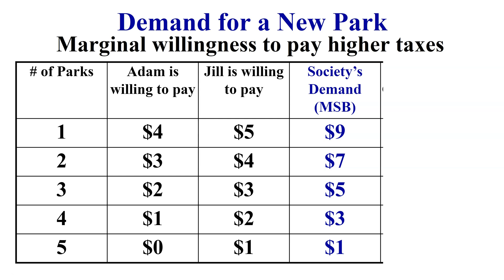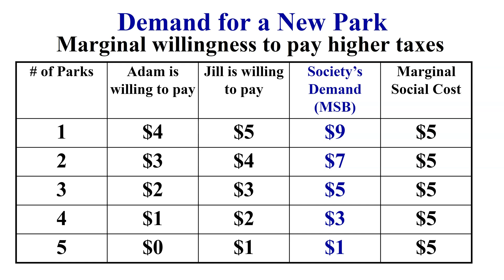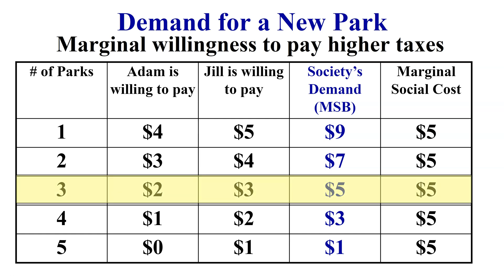The marginal social benefit for one park is a willingness to pay $9; since each park costs only $5, MSB is greater than MSC, so we should continue producing. We produce at our socially optimal level where MSB equals MSC — that's where they are equal at three parks: $5 marginal social benefit equals $5 marginal social cost. So this town gets three parks — not two, not five — because MSB equals MSC at three parks in this model.